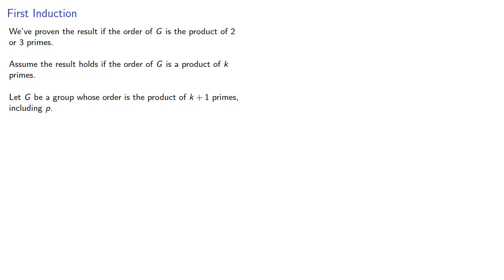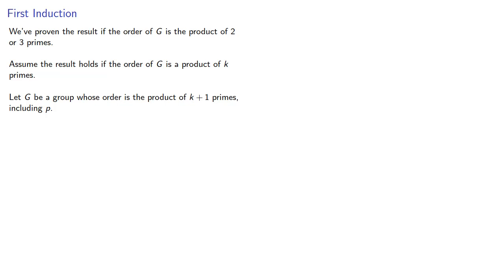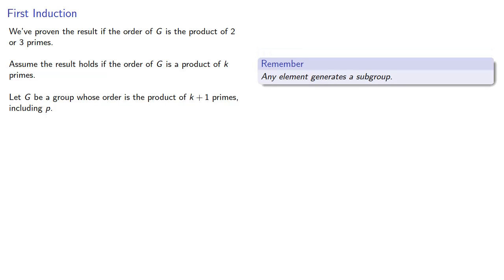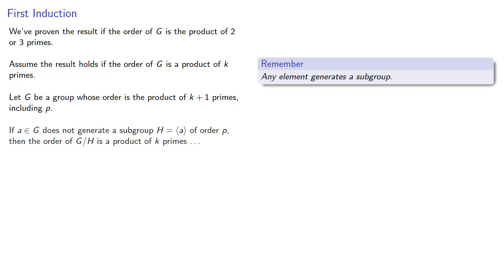Remember any element generates a subgroup, and so if a in g does not generate a subgroup h of order p, then the order of g mod h is a product of k primes — or is it?